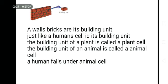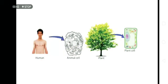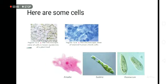Cell is its building unit. The building unit of a plant is called a plant cell. So whatever plant we see, a lot of our plants are made out of cells and they are called plant cells. The building unit of an animal is called an animal cell. Humans fall under animal cells.